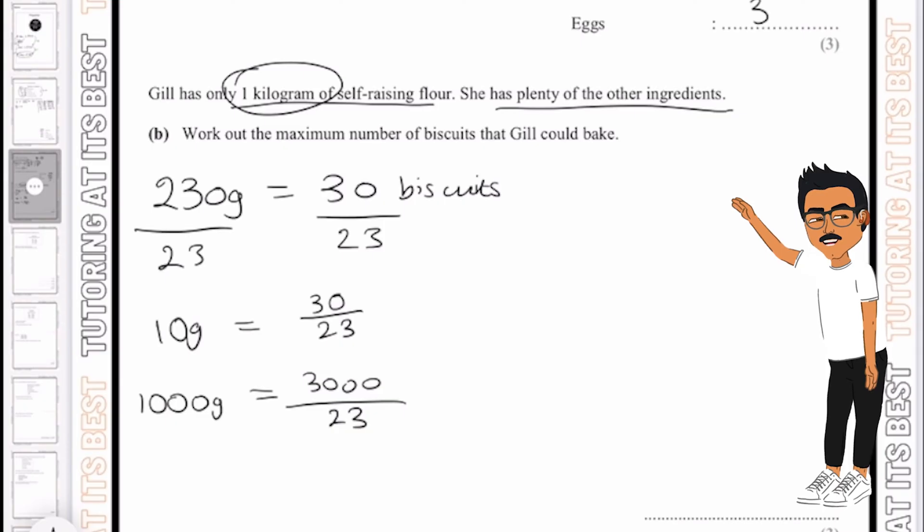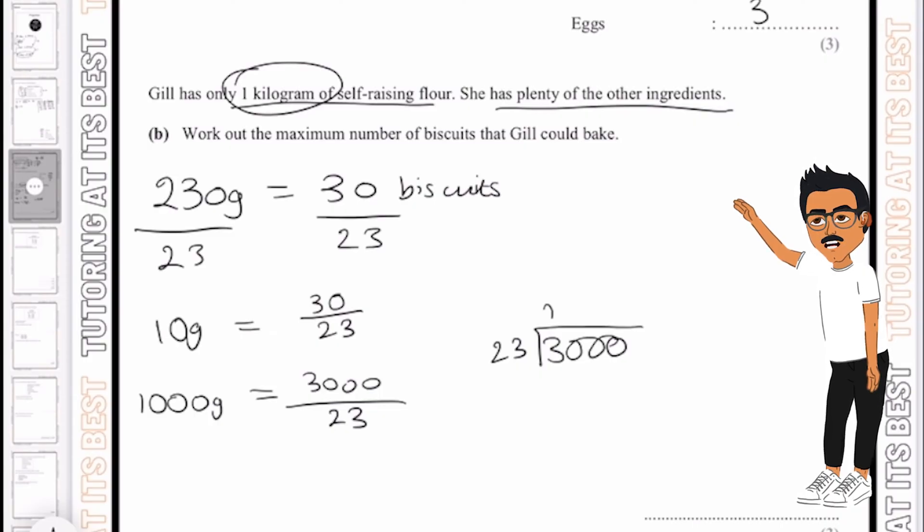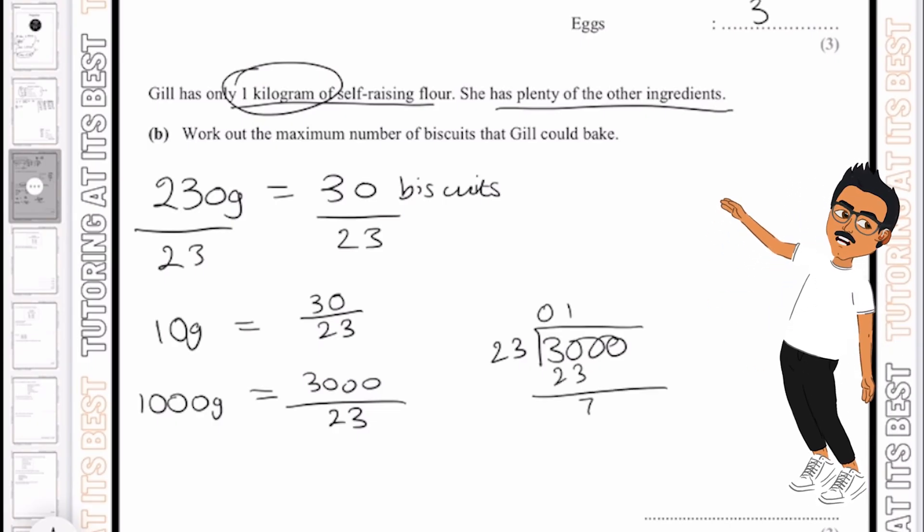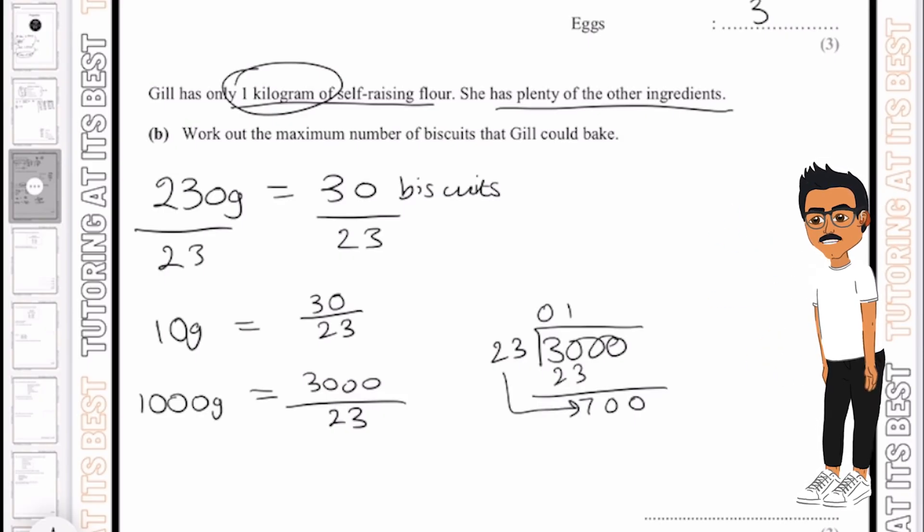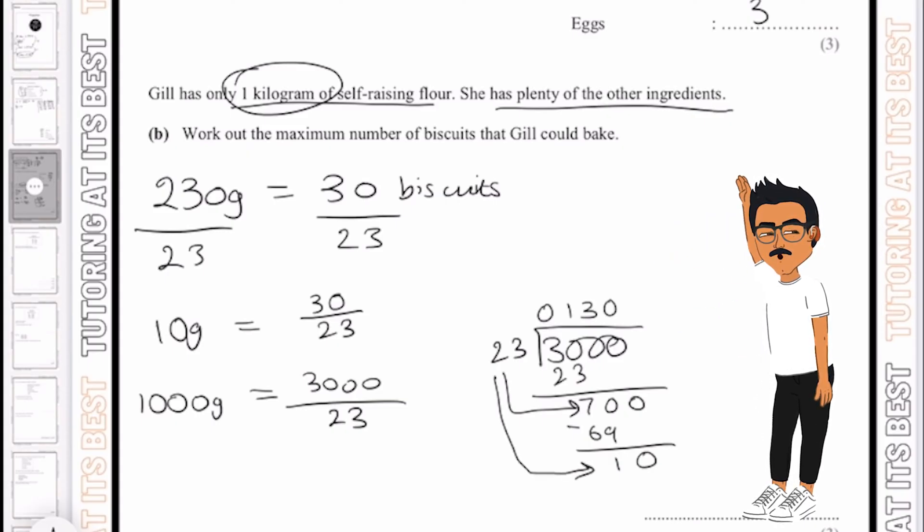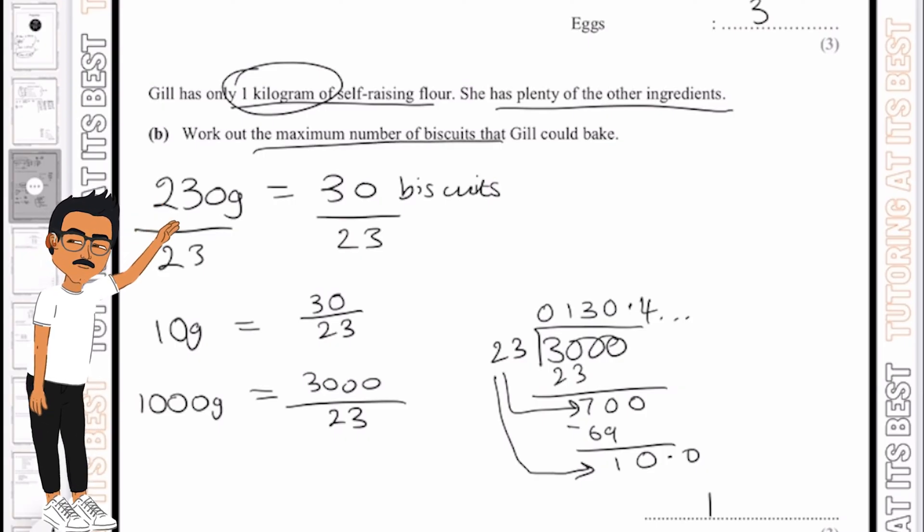So now we need to calculate this. So that would be 3000 divided by 23. We know 23 doesn't go into 3, but it goes into 30 once. And if I just place this here, we get a remainder of 7. And now 23 goes into 70, yes it does, that's 3 times. And that would give us 69. We subtract that away and we've got 10. We know 23 doesn't go into 10, so we put a zero and followed by a decimal because we make this into 100. And then we know 23 goes into 100 four times. And then we can stop there because we need a whole number. So the maximum number of biscuits that Gill could bake is 130.